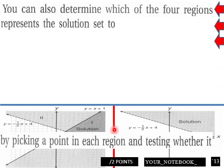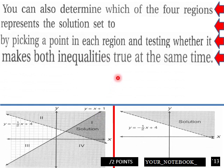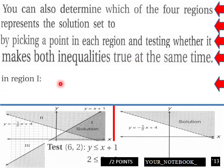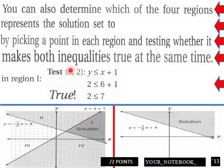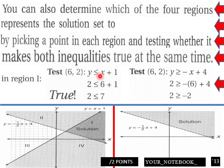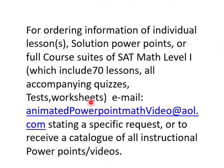You can also determine which of the four regions represents the solution set by picking a point in each region and testing whether it makes both inequalities true. So, we're going to test the inequality. 6 minus 2 is true for this one, and then 6 minus 2 for this other one is true as well. So, this would be the solution.